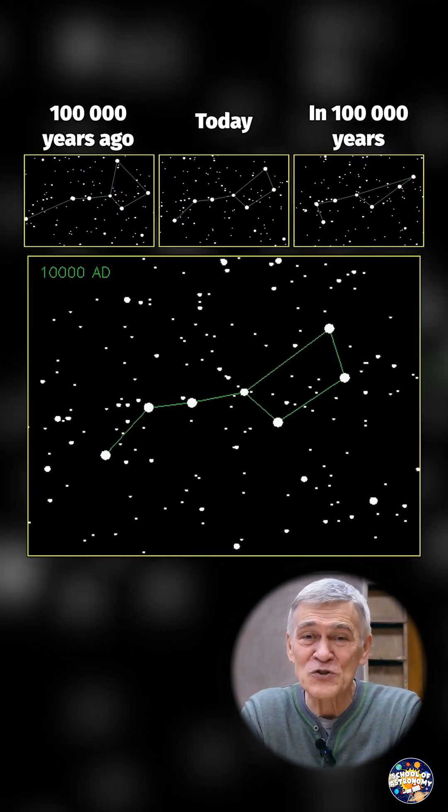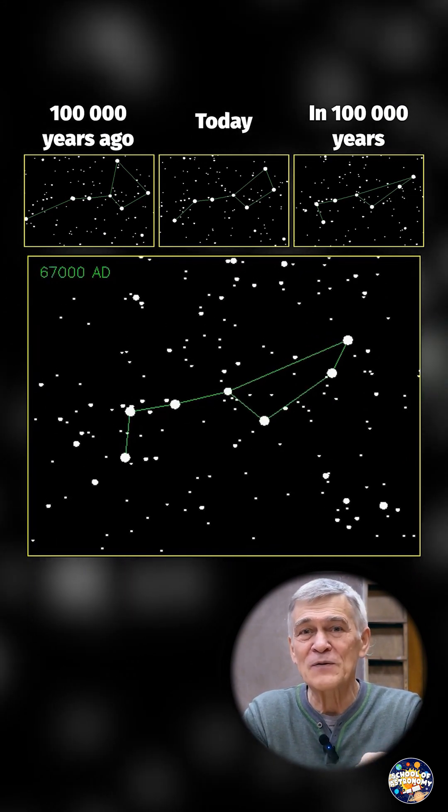In 100,000 years, the stars will change their position so much that it will look like some kind of ladle with a broken handle.